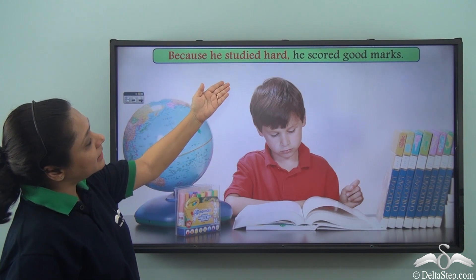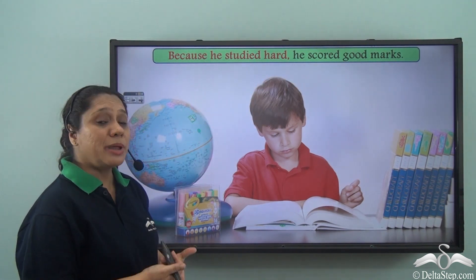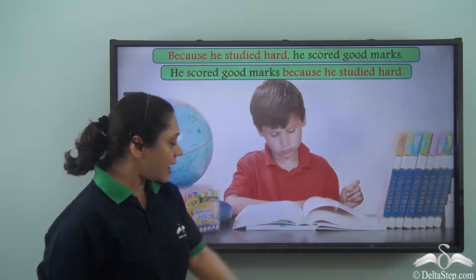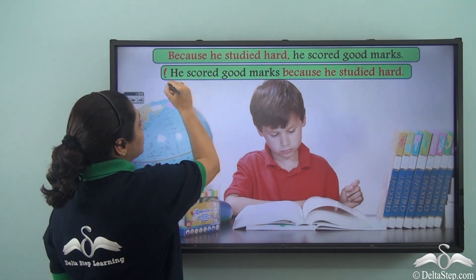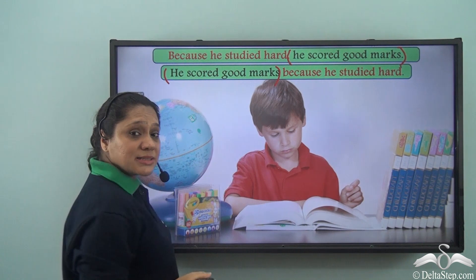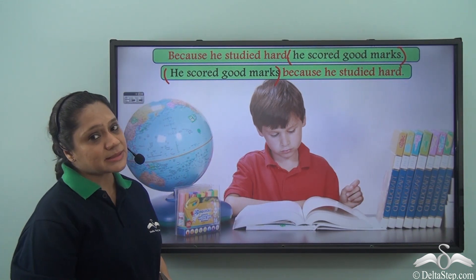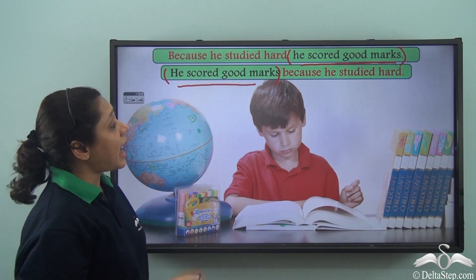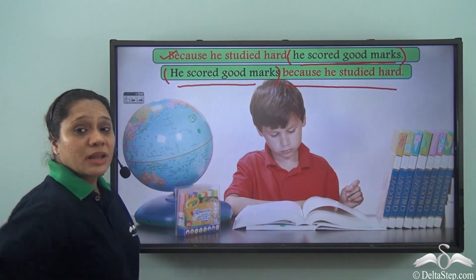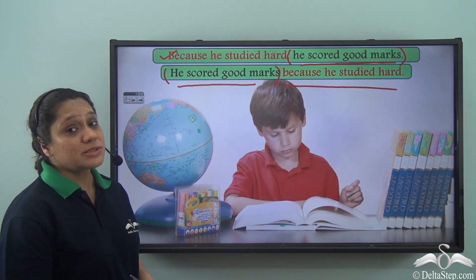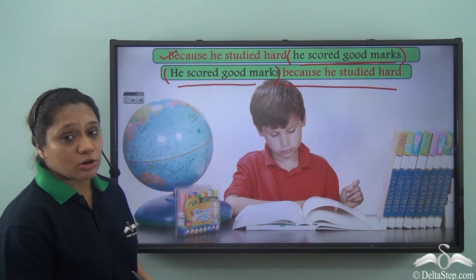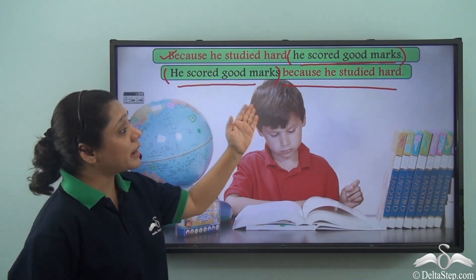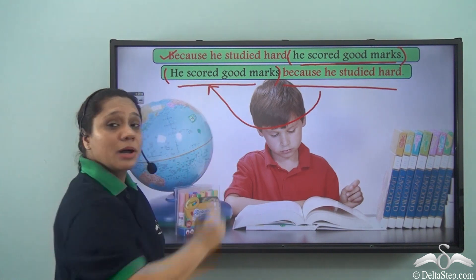Consider: 'Because he studied hard, he scored good marks,' which can also be written as 'He scored good marks because he studied hard.' In both sentences, 'he scored good marks' is the main clause, and 'because he studied hard' is the subordinate or dependent clause working like an adverb — an adverb clause showing reason. It answers why he scored good marks and describes the verb 'scored.'